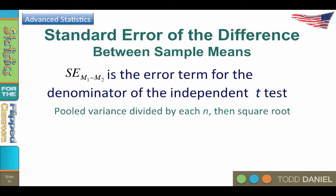You will use the pooled variance with the standard error of the difference between sample means, usually called the standard error of the difference. The standard error of the difference is the error term for the denominator of the t-test.